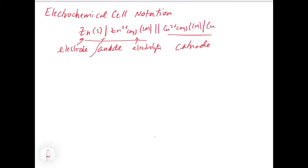This single line here denotes what we call a phase boundary. So we have a solid and then in the electrolyte we have the aqueous solution with the zinc two plus. That is the place where the zinc solid touches the zinc two plus. So we know that in that half cell we have a zinc metal electrode and a zinc two plus solution with a concentration of one molar.